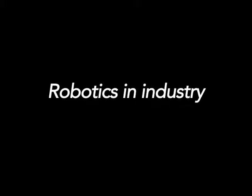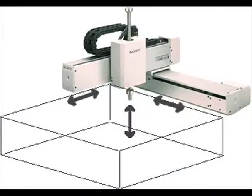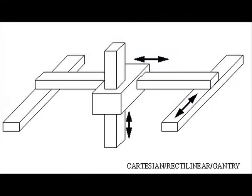Robotics in industry. The classic Cartesian robot is a common type of industrial robot functioning by three arms in a three-dimensional structure.